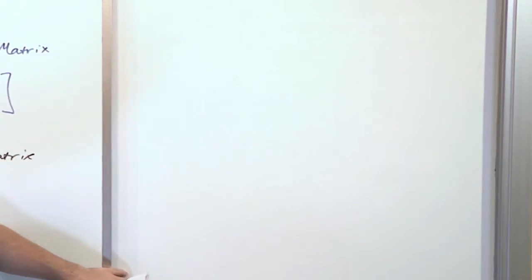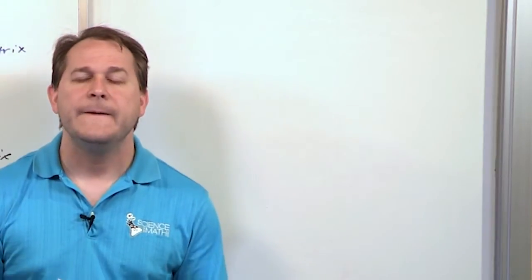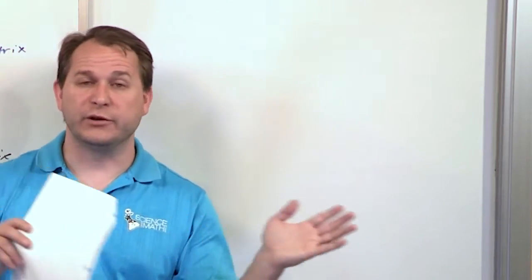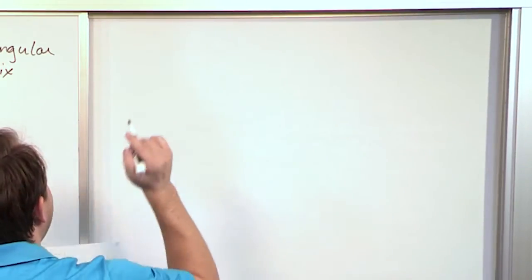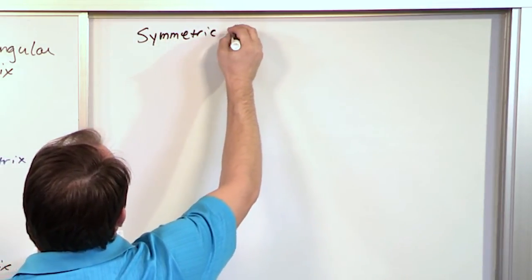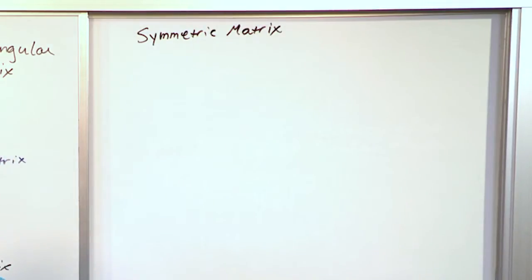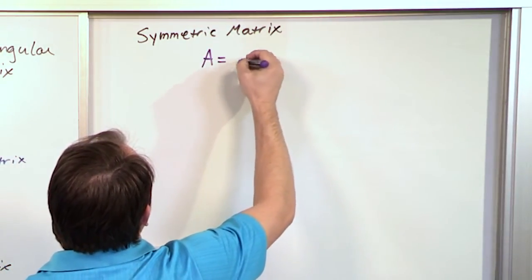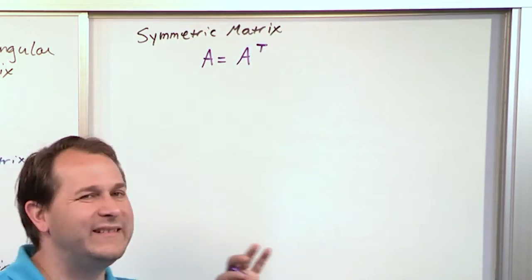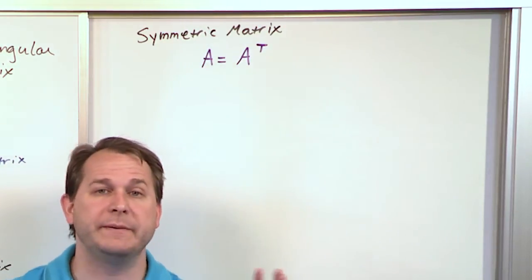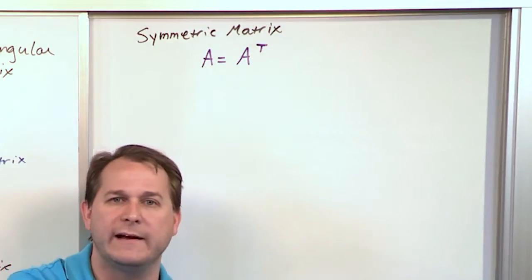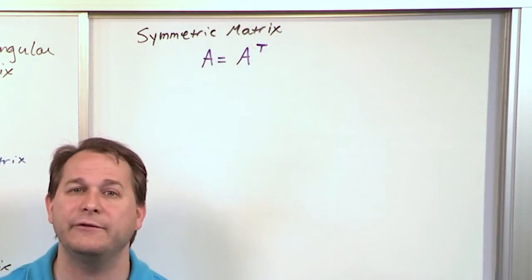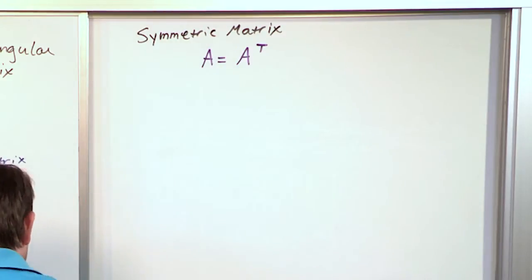The next thing I want to mention is something you'll definitely have seen before — the transpose of a matrix. The transpose is when you take the rows of the original matrix and turn them into columns, or equivalently take columns and turn them into rows — basically flipping rows and columns around. Related to that, we have something called a symmetric matrix. If somebody on a test asks you to determine if a matrix is symmetric, the test is: if the matrix is equal to its own transpose, it's said to be symmetric. In general, taking the transpose will give you something different, but in a very special case, you'll get the same matrix back — that's a symmetric matrix.